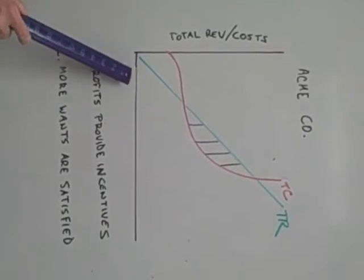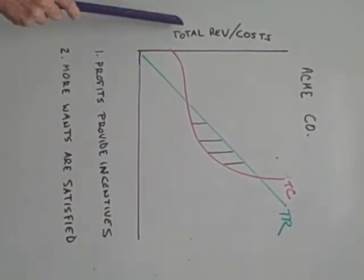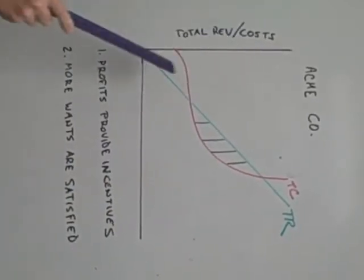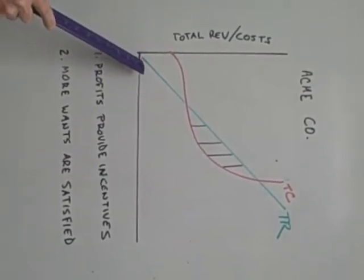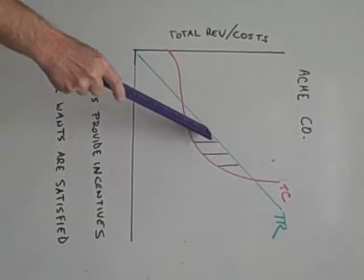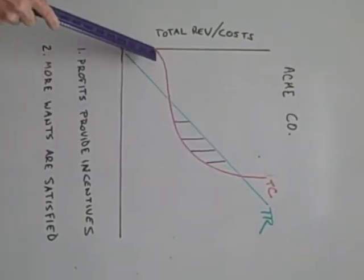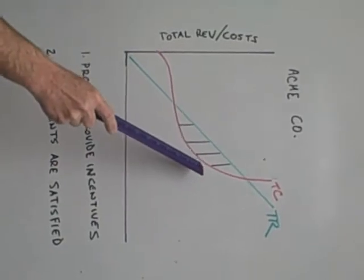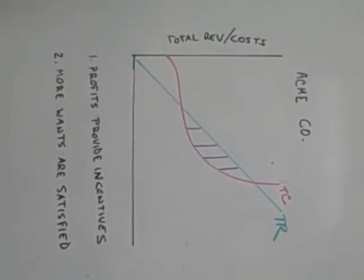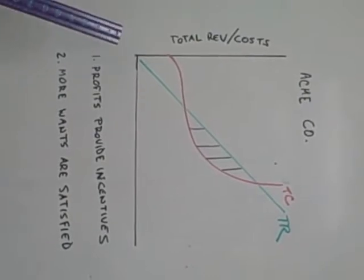Well, we were looking at a graph where we plotted quantity there and total revenue and total cost over there. We assumed the perfectly competitive market in which people are price takers, so the total revenue is a straight line. Then we assumed that total cost assumed this cubic regression line because of diminishing marginal returns and specialization.